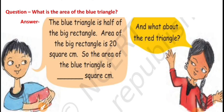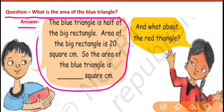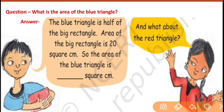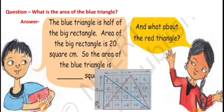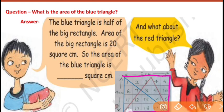The question is: what is the area of the blue triangle? We will find the area and check whether the areas are same or not. The answer is: the blue triangle is half of the big rectangle. You can see very clearly in this picture that the blue triangle is exactly half of the big rectangle.